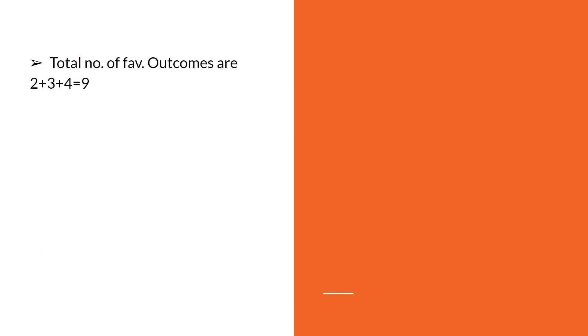So total number of favorable outcomes are 2 plus 3 plus 4 which is equal to 9, and total number of outcomes, because 2 dice are thrown in this case, is 6 into 6, that is 36. So probability will be 9 by 36, but we are not considering one case here.